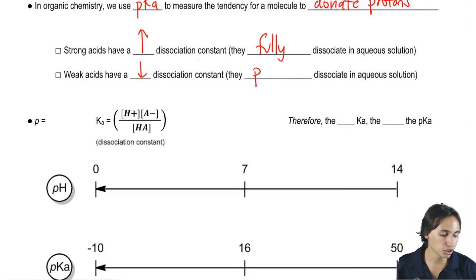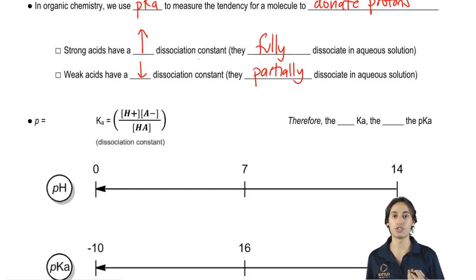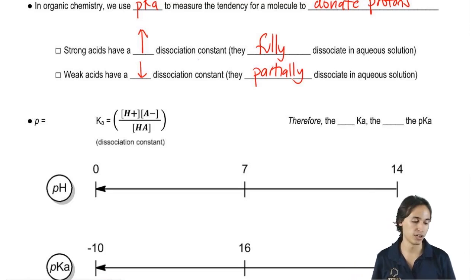Remember that weak acids are going to have a smaller dissociation constant. And what that means is that they're only going to partially dissociate in an aqueous solution. And that makes a huge difference because they're going to have different pKa's and different tendencies to donate protons.